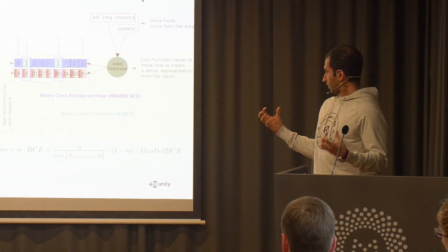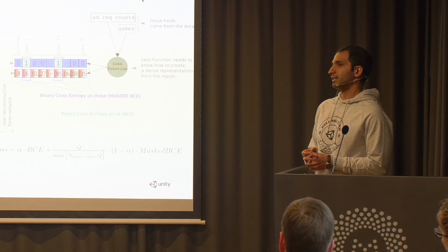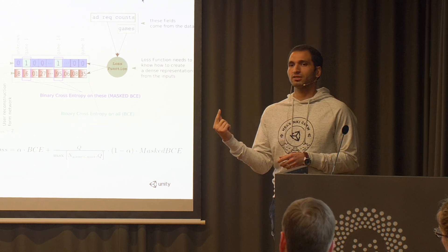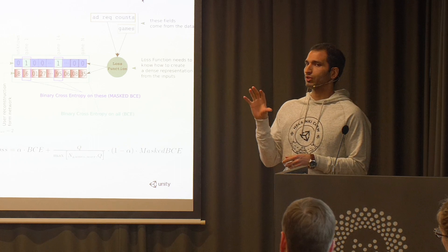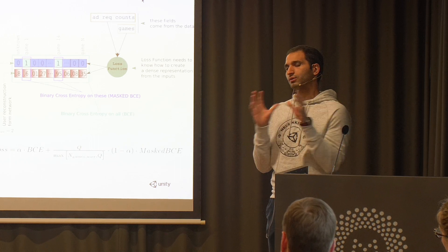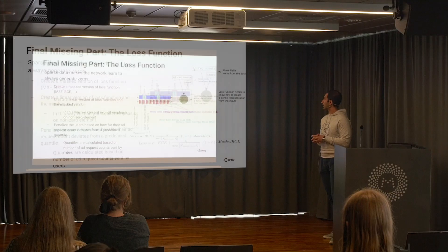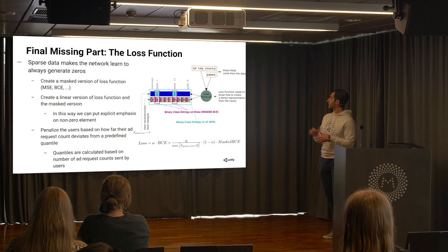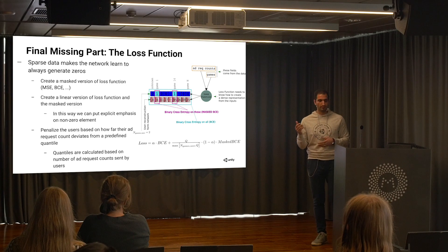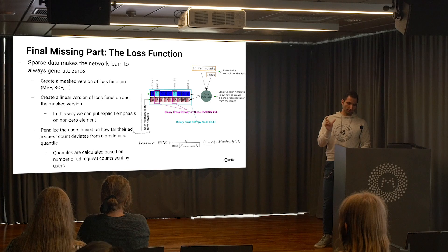We combine everything using a linear relation, introducing one more hyperparameter alpha, which defines how much emphasis to put on learning non-zero elements versus zero elements. With these three parts — masked BCE, normal BCE, and anomaly penalty — you can create an autoencoder and use the code layer as a dense user embedding in your destination network.